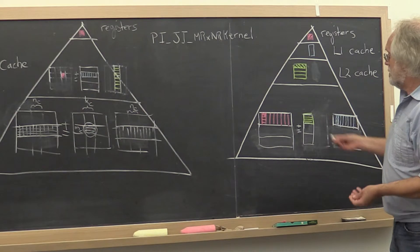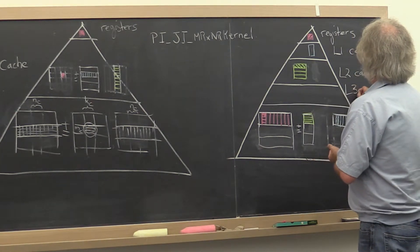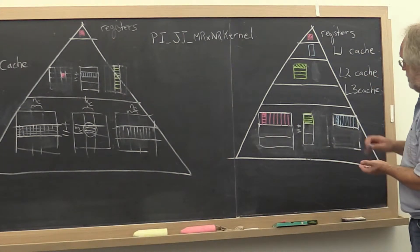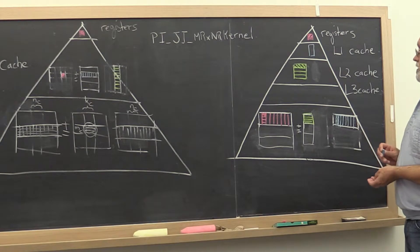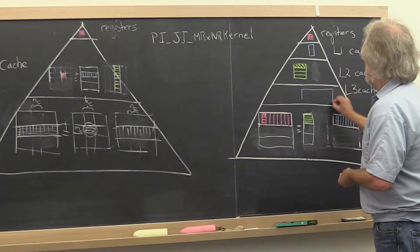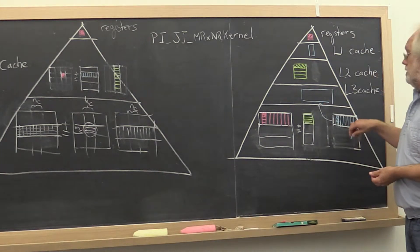And what that tells us is that if we have a level 3 cache, we probably should use it for this row panel of B.